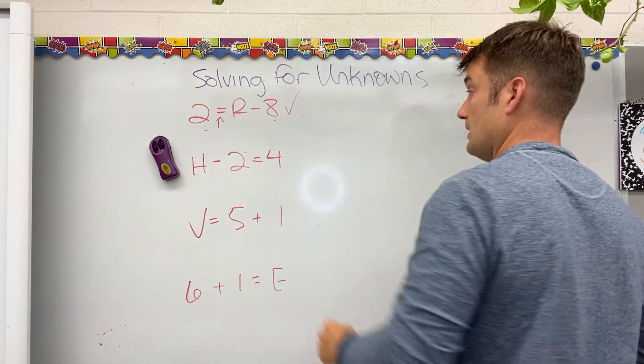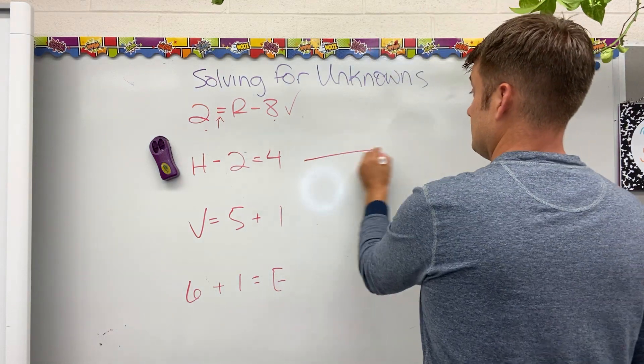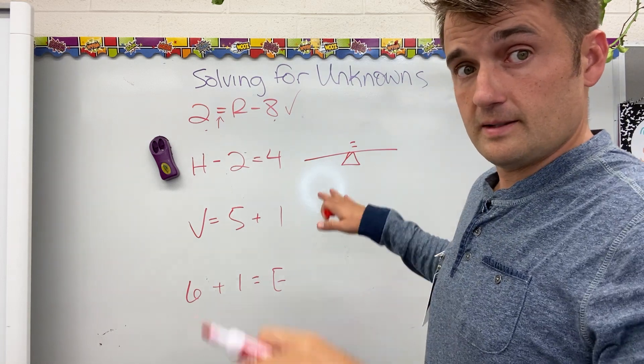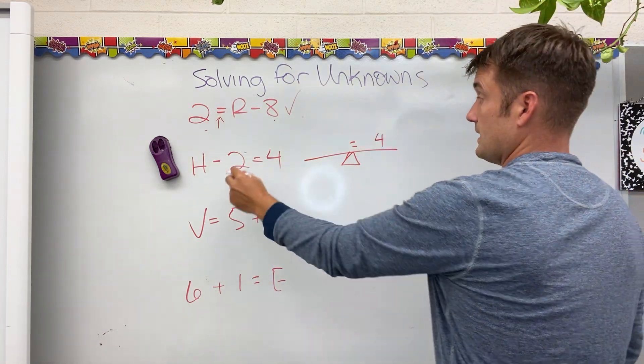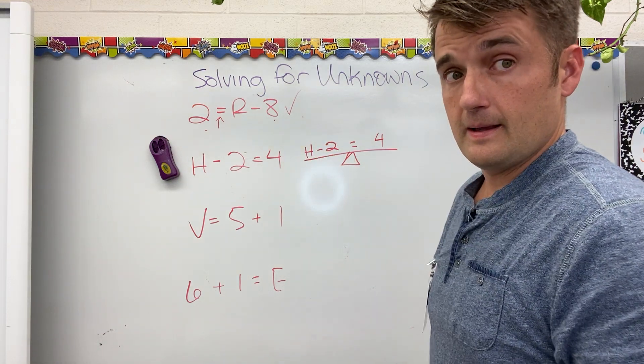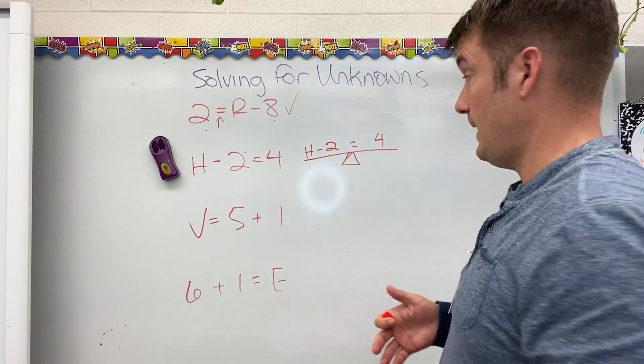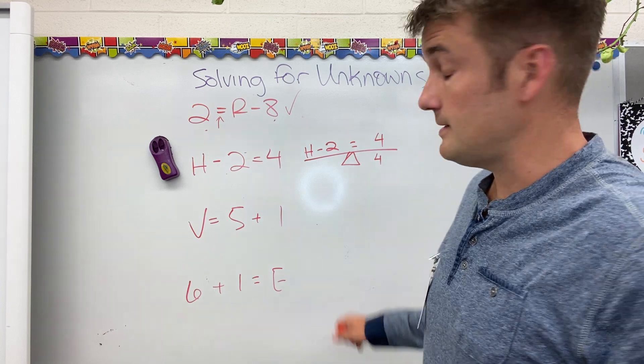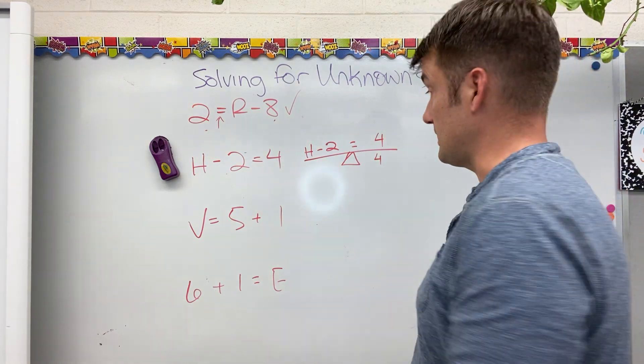Checkity check. h minus 2 equals 4. 4 seesaw equals balance. This side is 4. This side is h minus 2. The 4 is all by itself. That tells me that the value of that side of the equation is 4. In order to balance, the value of this side of the equation must be the same. It must also be 4.